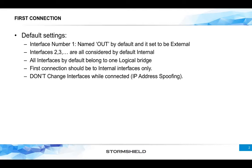Do not change interfaces while connected. If you connect to the firewall on port number two and then unplug the cable and plug it into port number three, the firewall will see your IP coming from two different interfaces and will block the connection, because this triggers an IP address spoofing alarm.